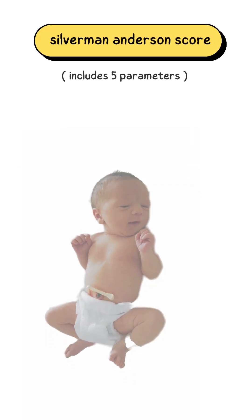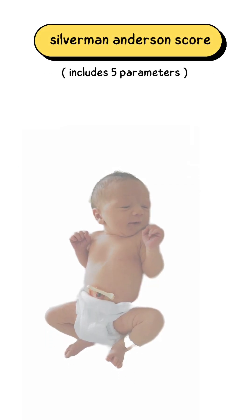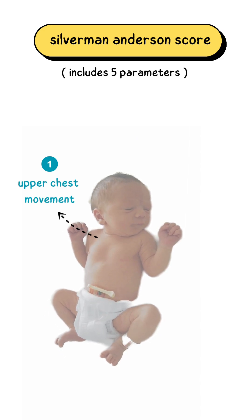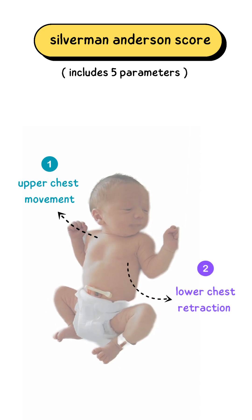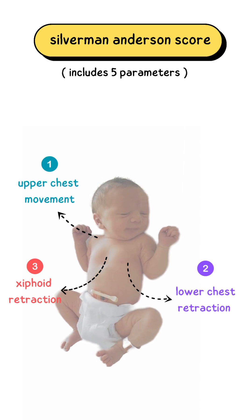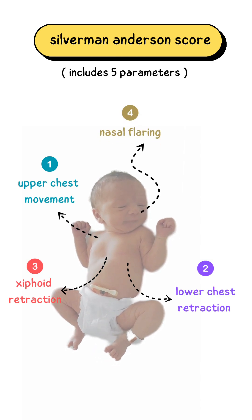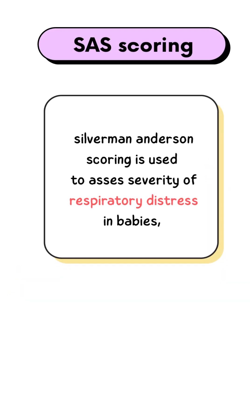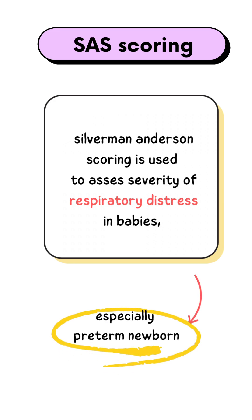The Silverman-Anderson score includes 5 parameters: 1. Upper chest movement, 2. Lower chest retraction, 3. Xiphoid retraction, 4. Nasal flaring, 5. Grunting. The Silverman-Anderson scoring is used to assess the severity of respiratory distress in babies, especially preterm newborns.